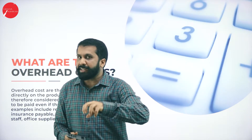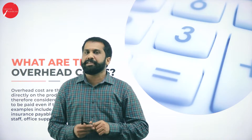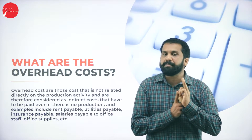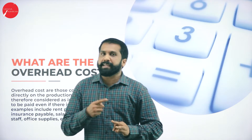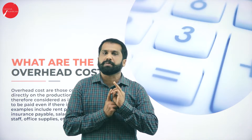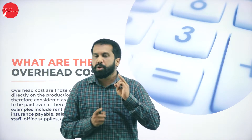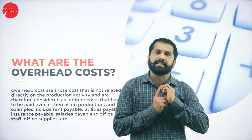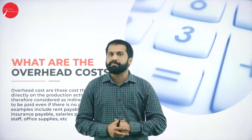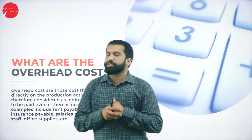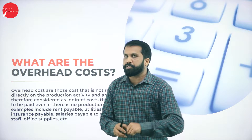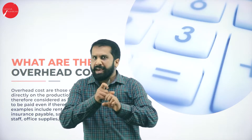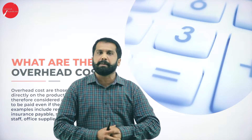Before I go to overhead cost, let me tell you what topics you will get for your examination under overhead. There are three subtopics: first will be overhead basic problems, meaning primary distribution. Once you are done with overhead primary distribution, the next part will be overhead secondary distribution. Once done with that, the last topic we are going to discuss is ABC analysis. ABC analysis is all theory — you will not get any problems from it. But we do have problems on overhead distribution, which has two subtopics: primary distribution and secondary distribution.